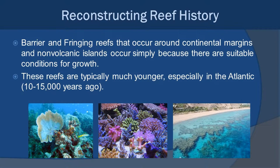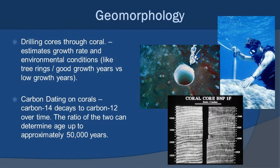Fringing and barrier reefs tend to be much younger, especially in the Atlantic Ocean, where we're looking at anywhere between 10,000 to 15,000 years ago. We can study reef growth through geomorphology by drilling cores through the coral. When we pull these cores out, we can look at growth rates over time — the results look very much like tree rings. We can tell which years had a lot of growth and which didn't. We can also do carbon dating: carbon-14 decays to carbon-12 over time, and the ratio between those two can determine age up to about 50,000 years.